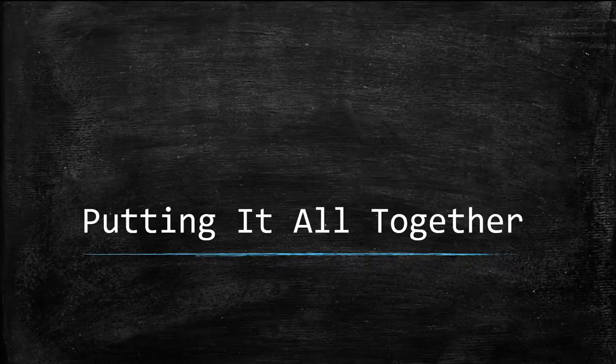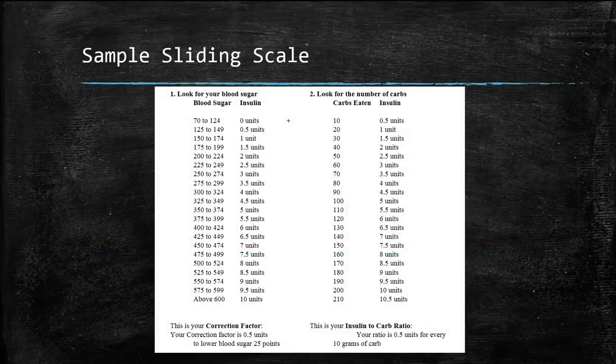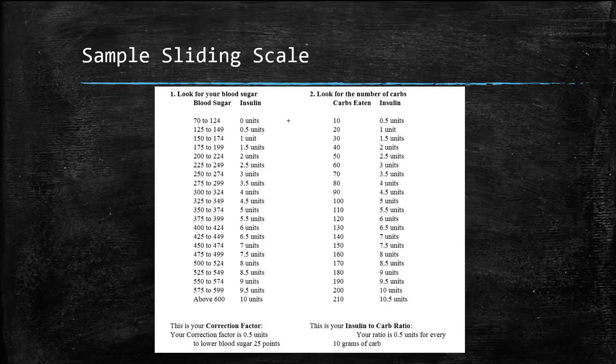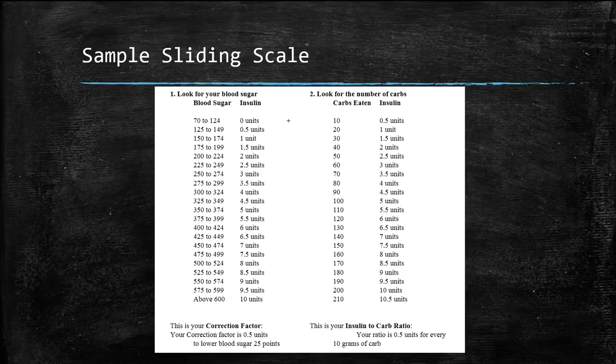Putting it all together. In this sliding scale, the correction factor is half a unit will lower blood sugar by 25 points, and the insulin to carb ratio is half a unit will cover 10 grams of carbs.